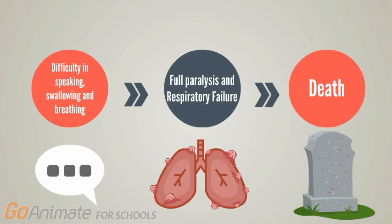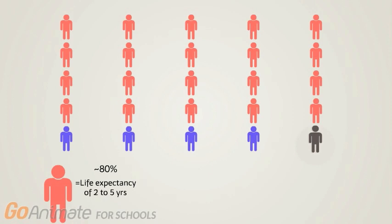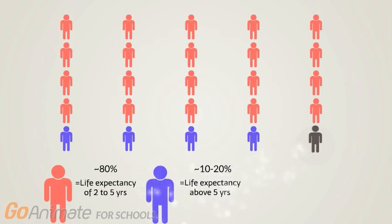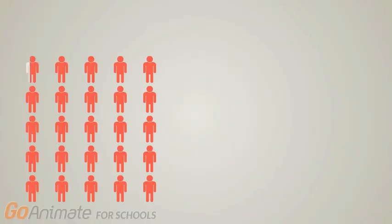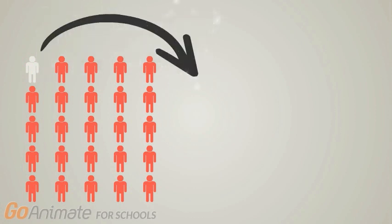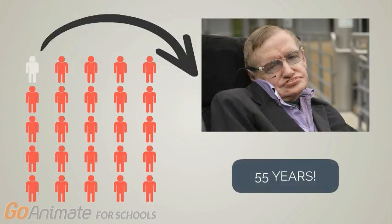The disease eventually progresses to full paralysis and respiratory failure, resulting in death. Eighty percent of ALS patients have an average life expectancy of two to five years, with another ten to twenty percent surviving over five years, and five to ten percent surviving over ten years. There are rare cases of longer survival, such as physicist Dr. Stephen Hawking, who lived for 55 years after his diagnosis.